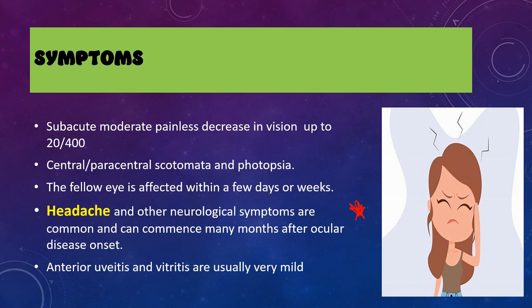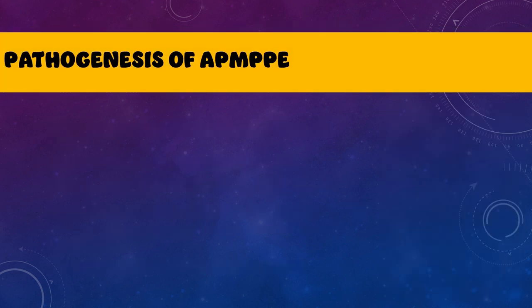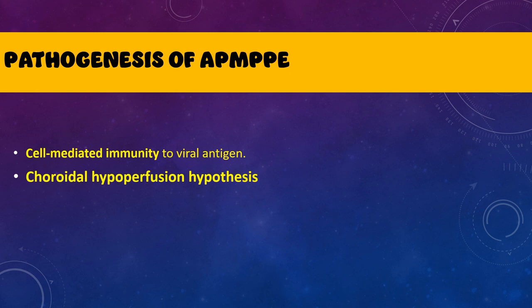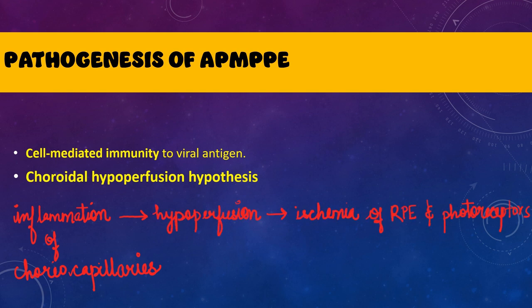APMPPE and MEWDS can also have mild anterior inflammation and vitritis. The pathogenesis of APMPPE involves two hypotheses: cell-mediated immunity to viral antigens, and choroidal hypoperfusion. Inflammation in the choriocapillaries decreases choroidal blood supply, causing hypoperfusion and ischemia of the RPE and photoreceptors. The outer layers of the retina from the outer nuclear layer are supplied by the choriocapillaries, so when there is hypoperfusion, the outer retina gets involved.